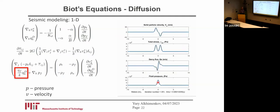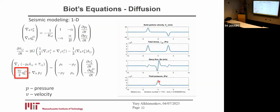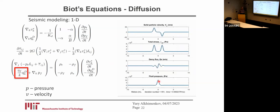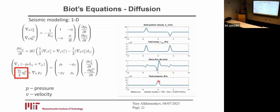But the slow wave behaves as a diffusion process — instead of a fast propagating wave, we have Darcian flow. It's fluid flow in porous media.